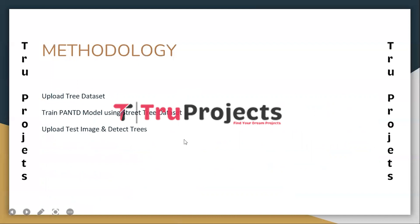These are the modules developed to implement this project. The first module is Upload Tree Dataset. In this module, the tree dataset is uploaded to the application. The dataset contains a collection of images depicting various types of trees found alongside roads.